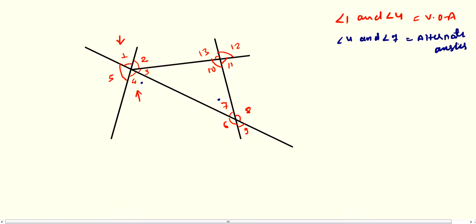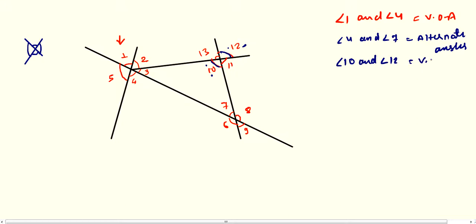The third part is angle 10 and angle 12. This is angle 10 and this is angle 12. These two angles are said to be vertically opposite angles, because when two lines are intersecting each other these angles are equal and they are known as vertically opposite angles. So angle 10 and angle 12 are vertically opposite angles.